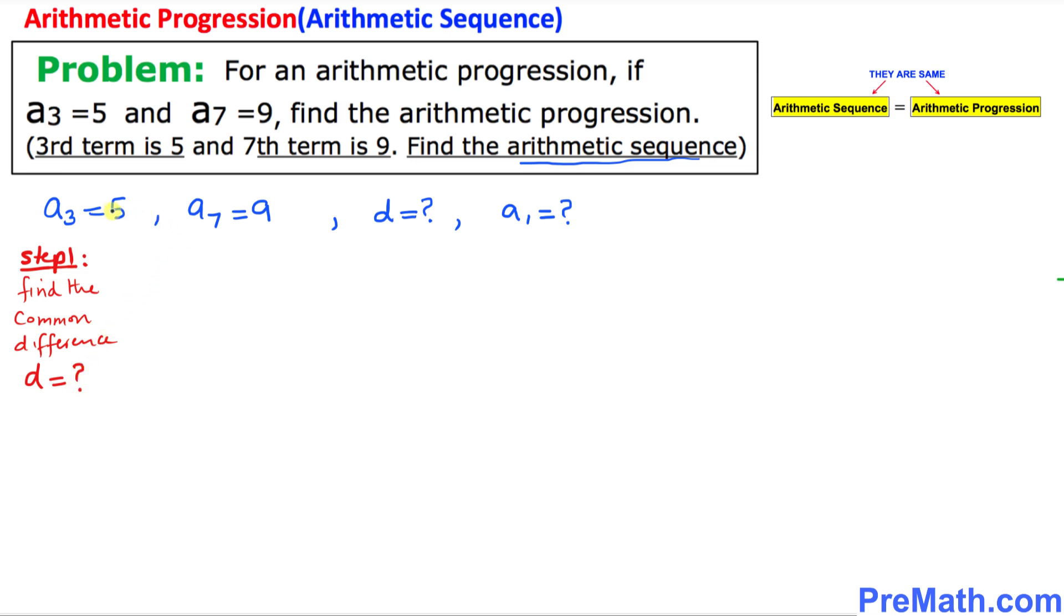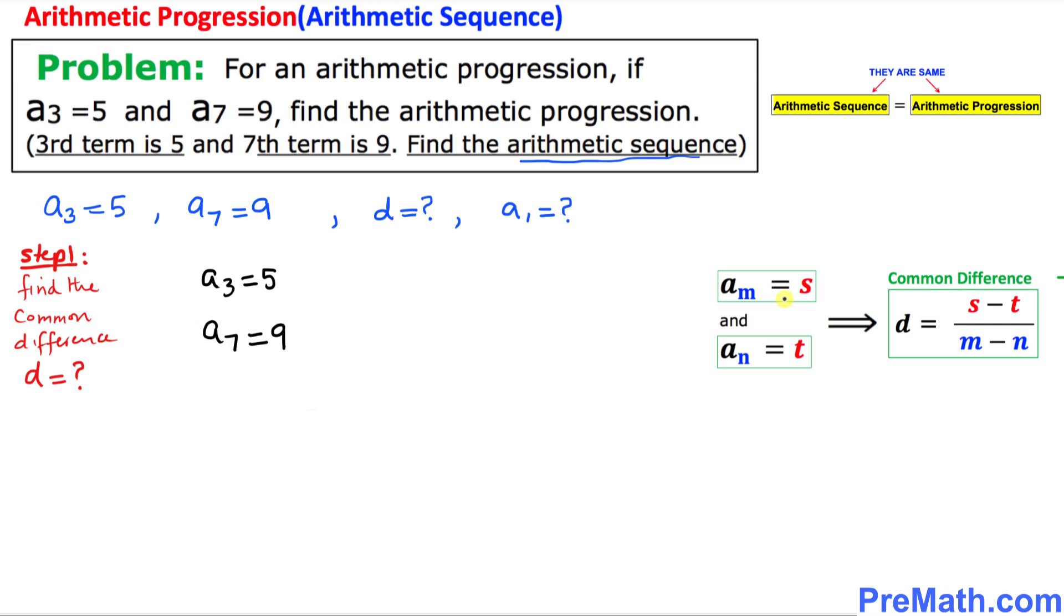The very first thing that we have been given is a₃ = 5 and a₇ = 9. As you can see, this has been given to us, and we will be using this really simple formula.